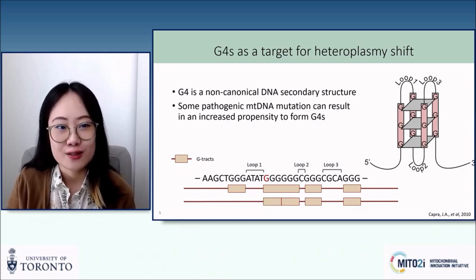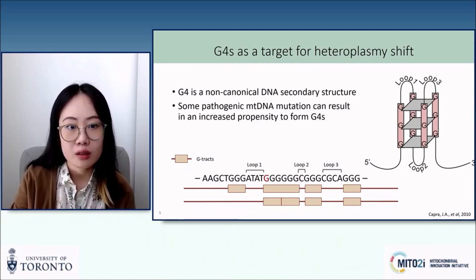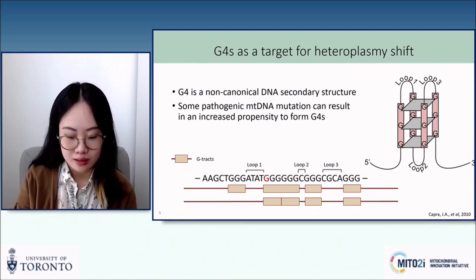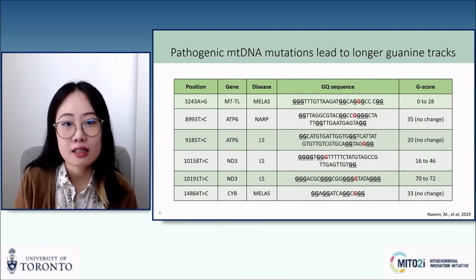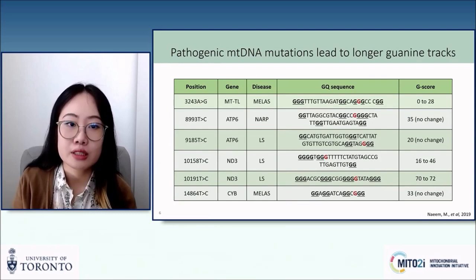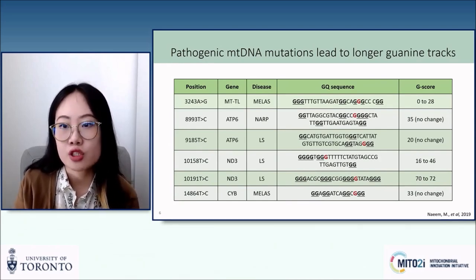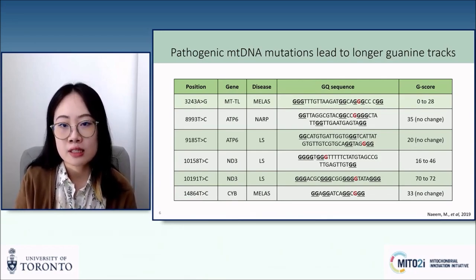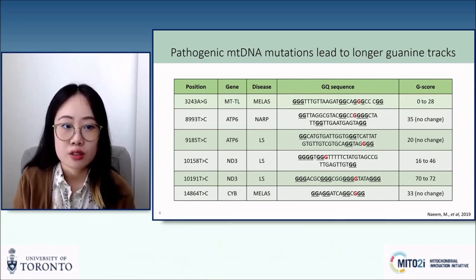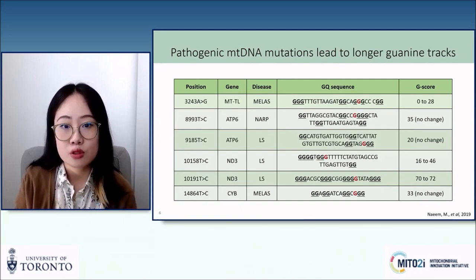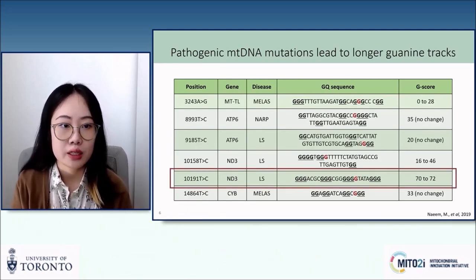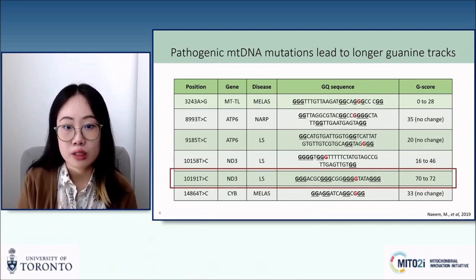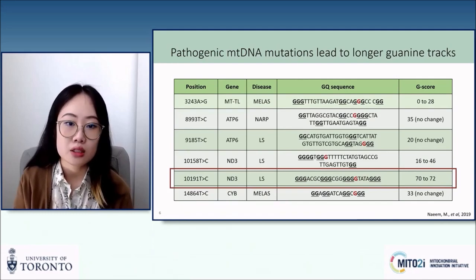Alternatively, it can be considered as two guanine stretches connected by a loop size of zero. Previous work in the lab has identified six pathogenic mitochondrial DNA mutations that result in an increased length of guanine tracts on mitochondrial DNA. Underlined here are the guanines that participate in the formation of G4 structures, while the site of the mutation itself is highlighted in red. All of the mutations increase the length of the guanine stretch, which enables the sequence to form a more stable G4 structure compared to the wild-type sequence. For my project, I'll be focusing on the T-to-C mutation at position 10191, which results in a non-synonymous serine-to-proline loss-of-function mutation in the protein ND3, leading to a disease called Leigh syndrome.